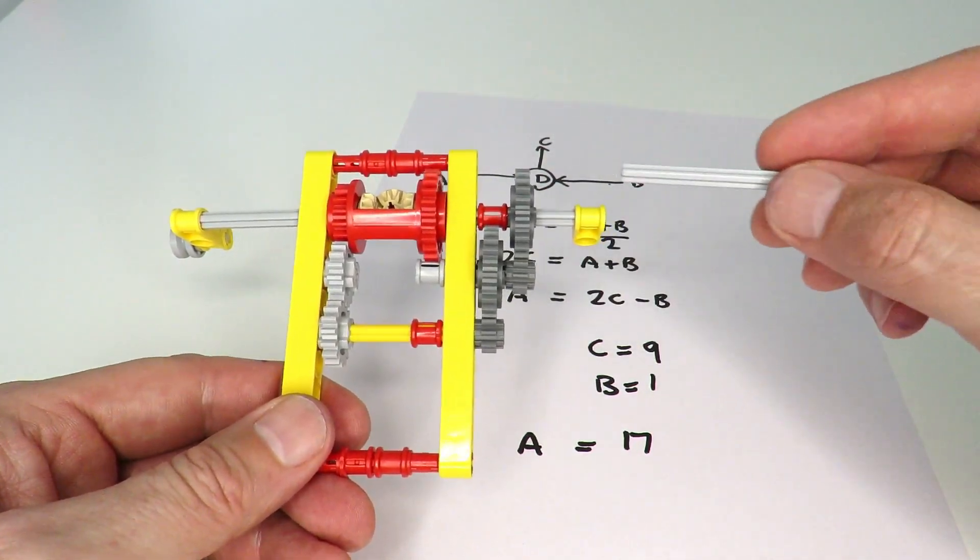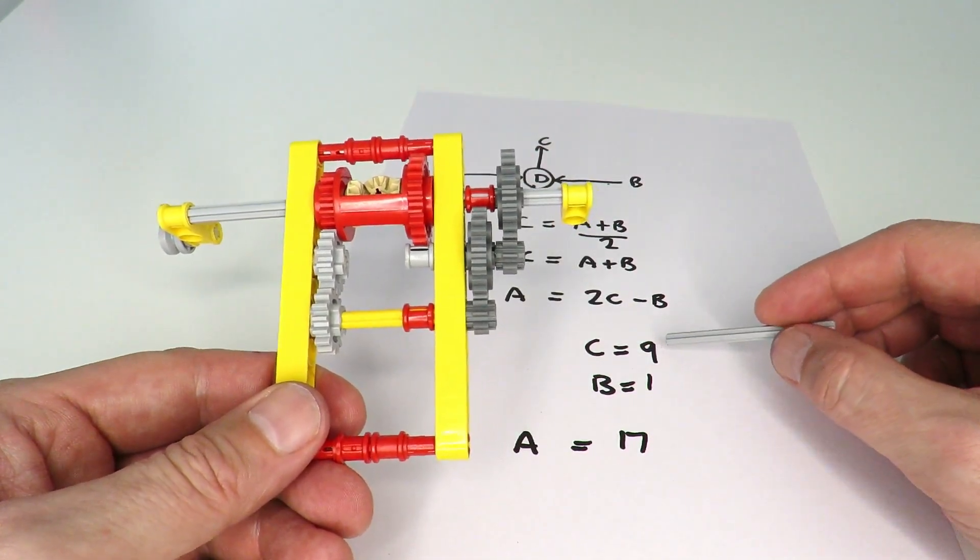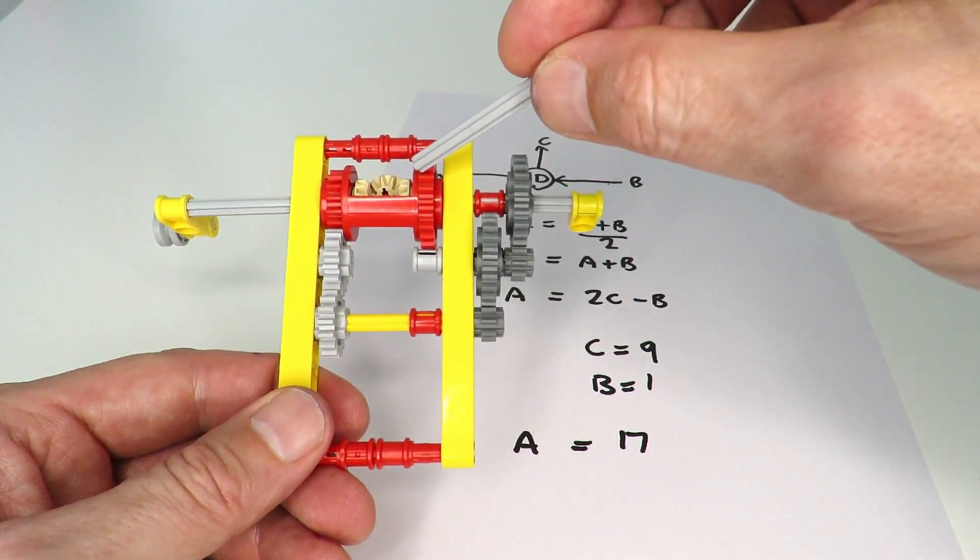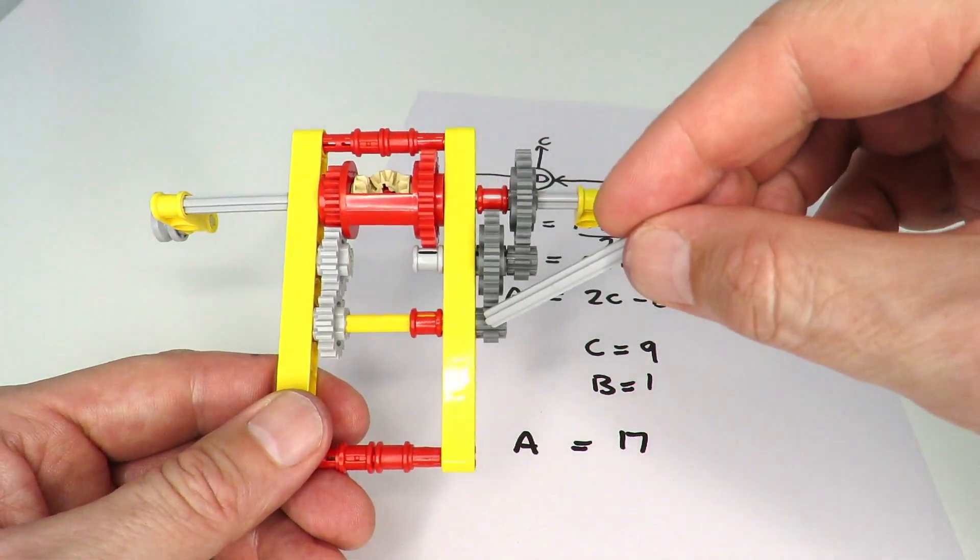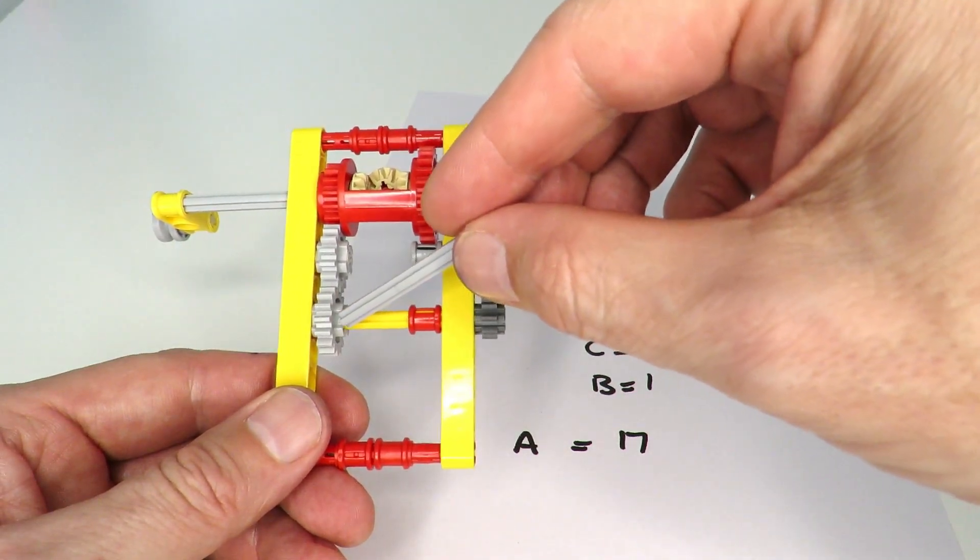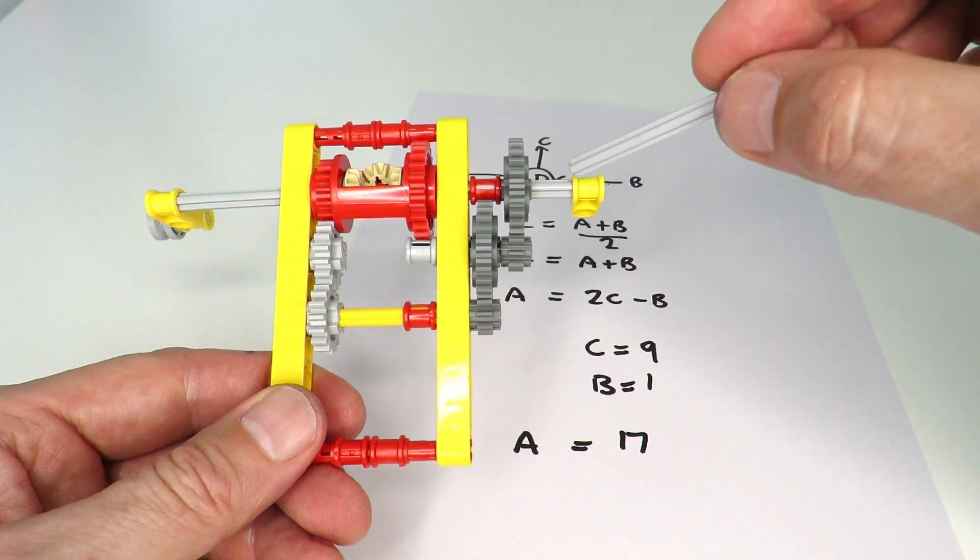According to the math, if we've got B equal to 1, that means for every revolution of B going around once, we need C of 9. That means that C needs to go around nine times, C being the central barrel. So we've done that by driving it from a three to one, another three to one, which then connects to a one to one and a one to one.